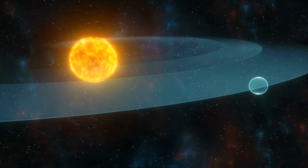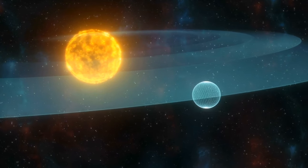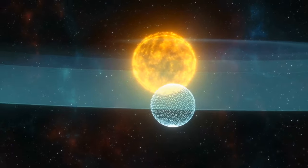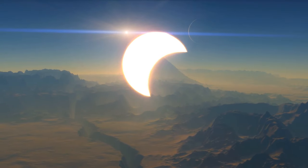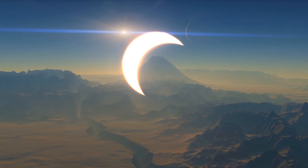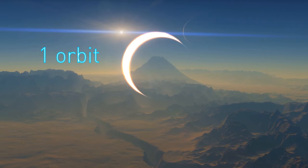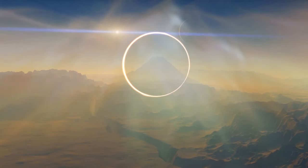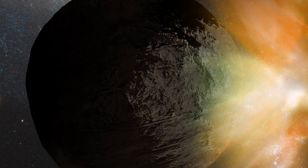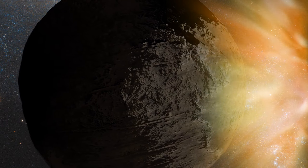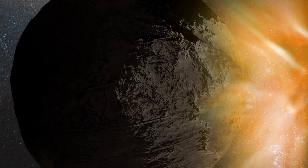It looks like the exoplanet is tidally locked with its parent star. One of its sides faces the star at all times, and the other is always in the darkness. Scientists haven't figured out yet whether the planet has an atmosphere. It's traveling too close to its star and completes one orbit within 11 Earth days. The radiation from the star might be pulling the planet's air away. If this is the case, Proxima Centauri b isn't likely to have liquid water on its surface.